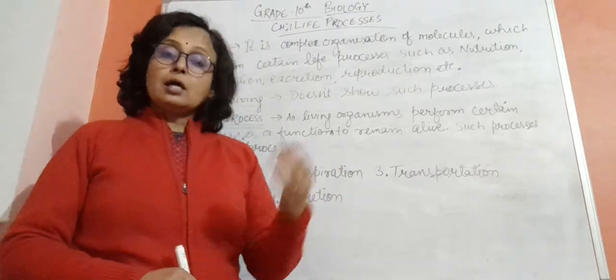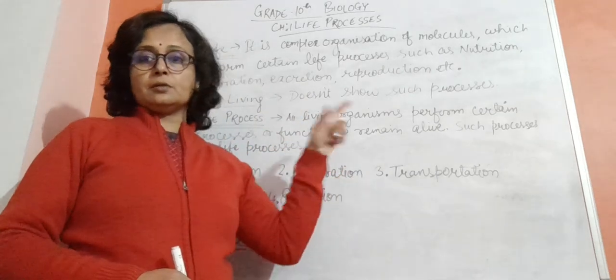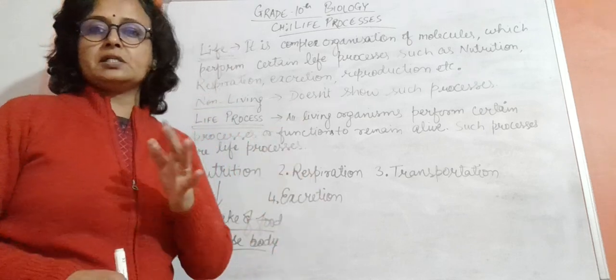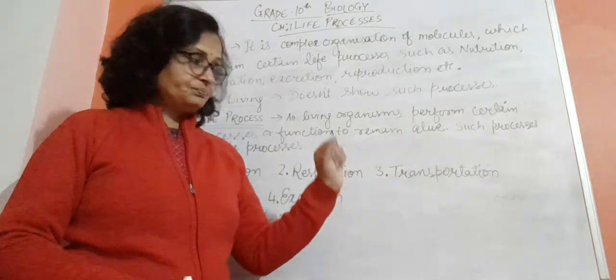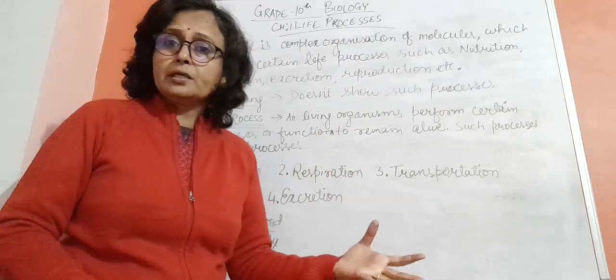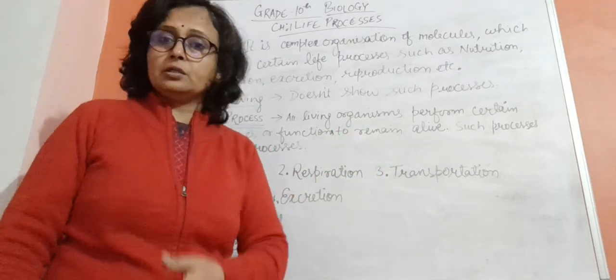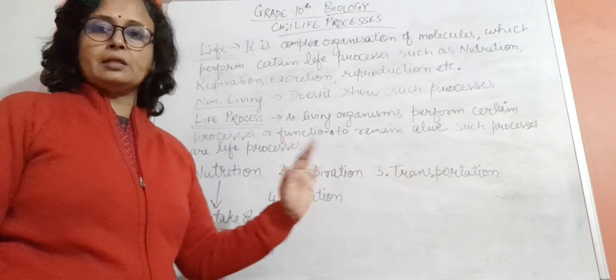Then transportation. Ab food se energy mil gahi, oxidation ke through respiration se. Then wo transport bhi toho hona jaruri hai. It should be reached to each and every cell of the body. So the process through which all the nutrients, useful things as well as waste materials are get transported from one part of the body to another part, it's called transportation. Yeh bhi hum detail mein baag mein padhenge.